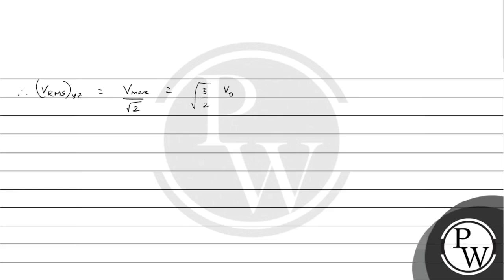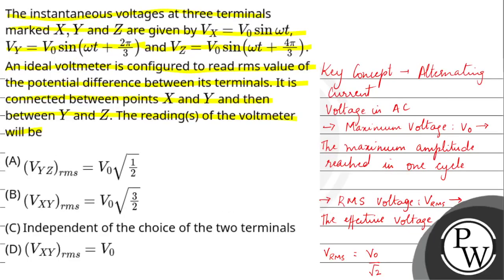We can see that there are two correct options. The RMS value is independent of which terminal pair we measure across, and we are also getting Vrms = V₀√(3/2). So option B is correct — Vxy_rms = V₀√(3/2) — and option C is also correct — the reading is independent of the choice of the two terminals. Hope you have understood it well. Best of luck.